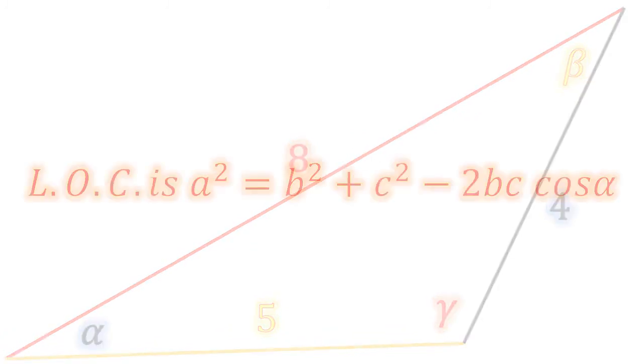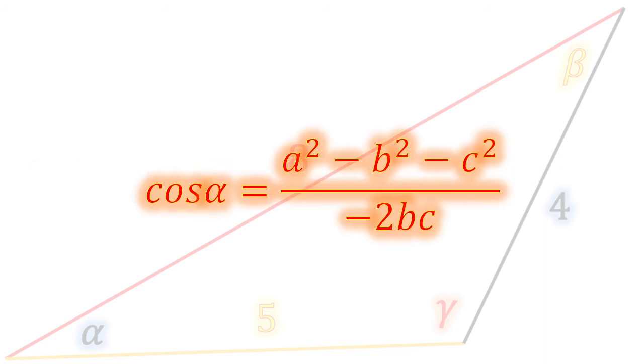The law of cosines is A squared equals B squared plus C squared minus 2 times B times C times the cosine of alpha. A little bit of algebra later, and we will be able to solve for the cosine of alpha, which is A squared minus B squared minus C squared over negative 2 times BC.